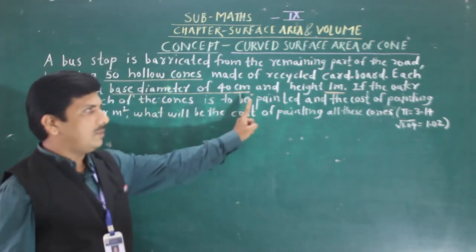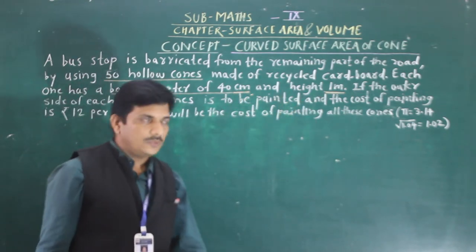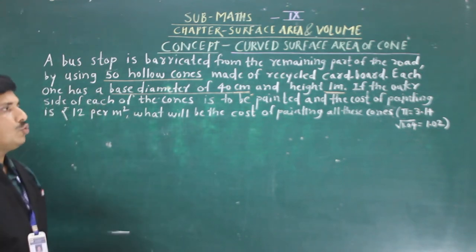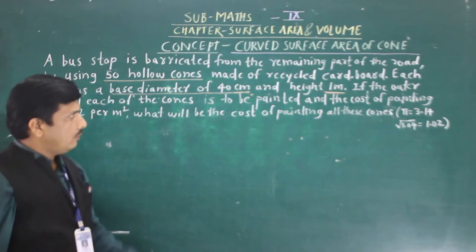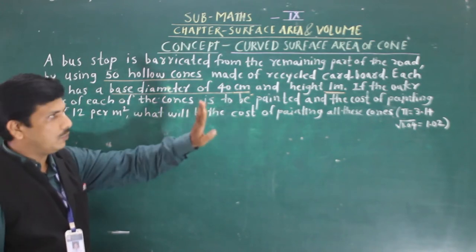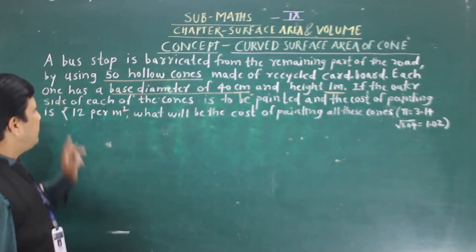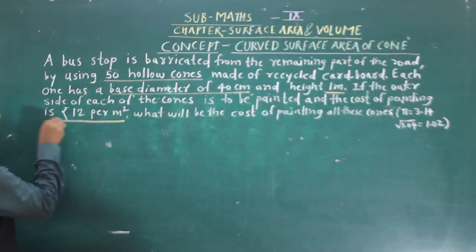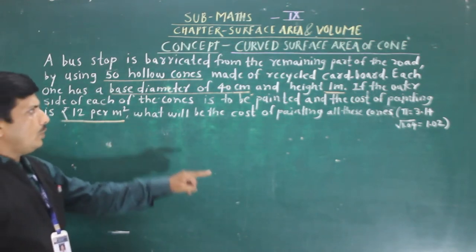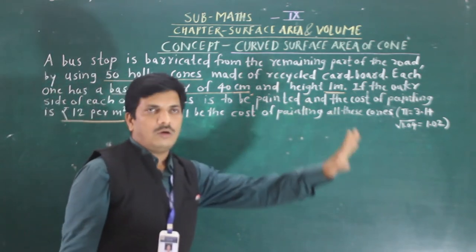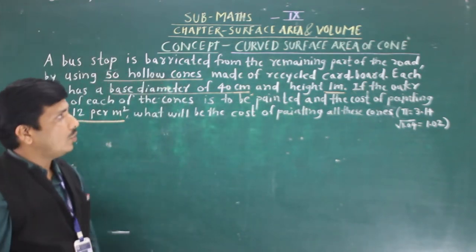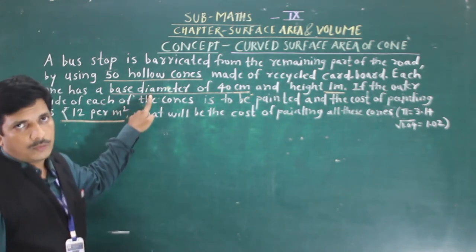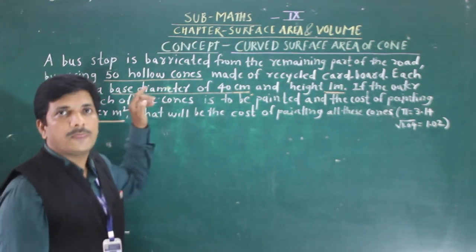The diameter is given in cm and the height is given in meters. The outer side of each of the cones is to be painted, and the cost of painting is 12 per meter square. We need to find the cost of painting all 50 cones. Diameter is given, so from diameter in cm we can find out radius.